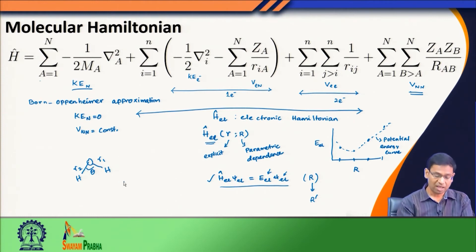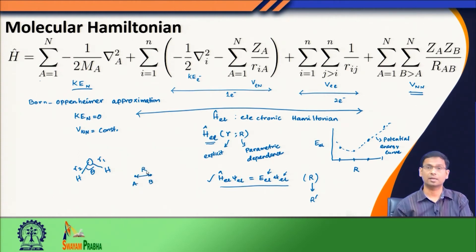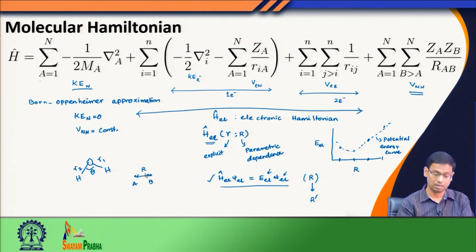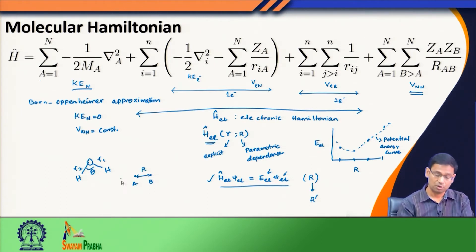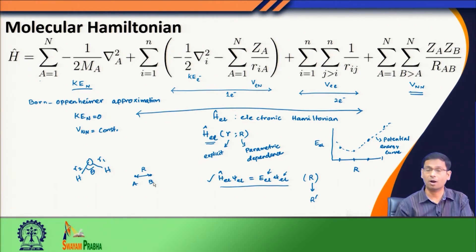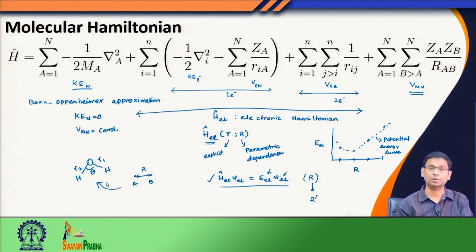This potential energy curve is obtained by solving the electronic part of the problem many times, each time with a different nuclear configuration — by changing bond length R₁ or changing bond angle theta, or changing both simultaneously. Now if I have a simple diatomic molecule like AB, I have only one internal nuclear coordinate, which is the bond distance. I can simply increase it or decrease it.